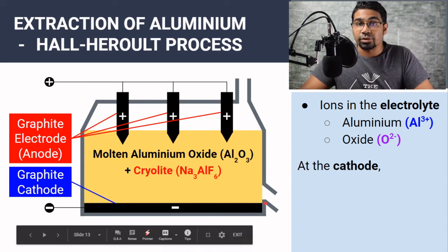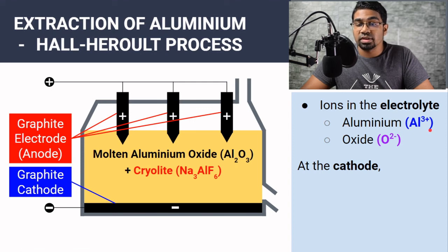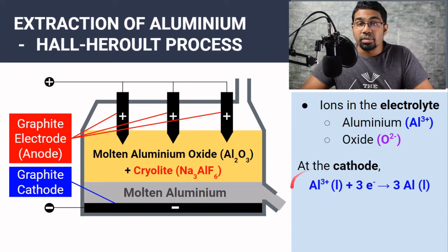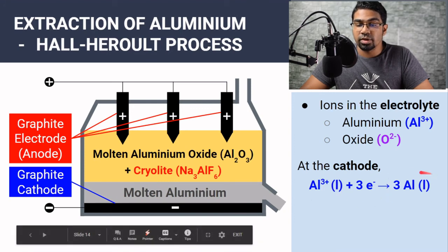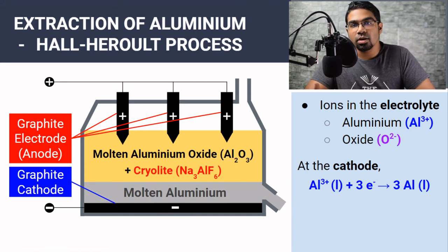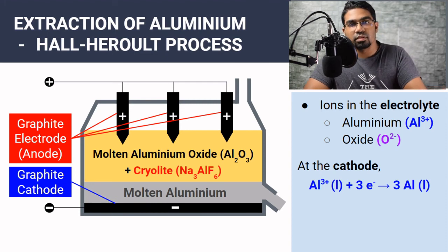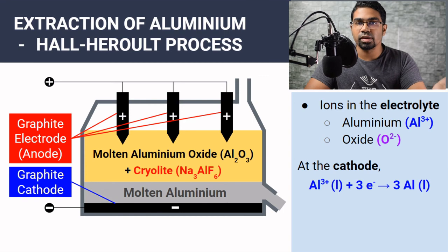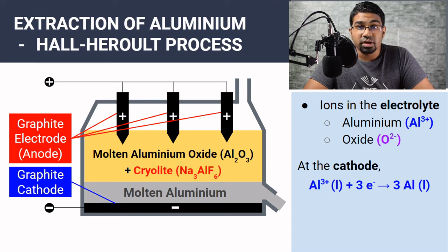At the bottom we have a graphite cathode. At the cathode, we only have aluminium as the cation, so aluminium is going to be discharged. Aluminium is a cation, so in order to be discharged it has to accept electrons. Aluminium ions accept electrons to become molten aluminium at the bottom, at the cathode. This molten aluminium can then be tapped out and formed into ingots, or solid aluminium when it cools down. This is how we obtain pure aluminium from bauxite. Purification is done first by the Bayer process — bauxite is made into alumina — and then aluminium is extracted from alumina by the Hall-Héroult process using an electrolytic cell.